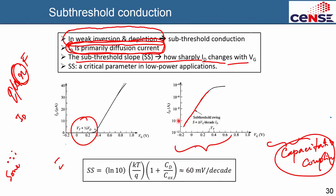So for every order of magnitude change in current, you have to change the voltage by 60 mV. Going from 10⁻⁹ to 10⁻⁸ costs 60 mV; from 10⁻⁸ to 10⁻⁶ costs 120 mV (two orders). For example, if you want a 5-order-of-magnitude change in current (from 10⁻¹¹ to 10⁻⁶), you need 5 × 60 = 300 mV on the gate. That 0.3 V swing gives you 5 orders of magnitude change in drain current — and that is the best case scenario.